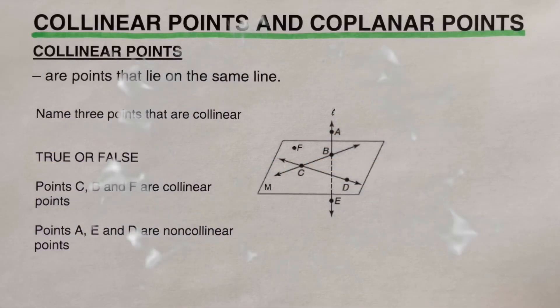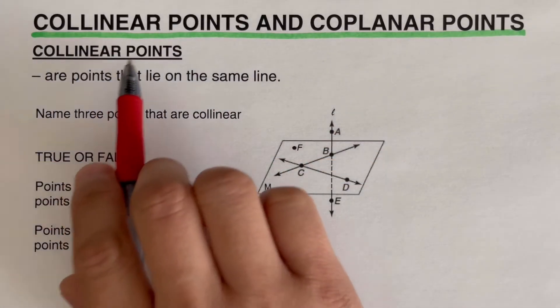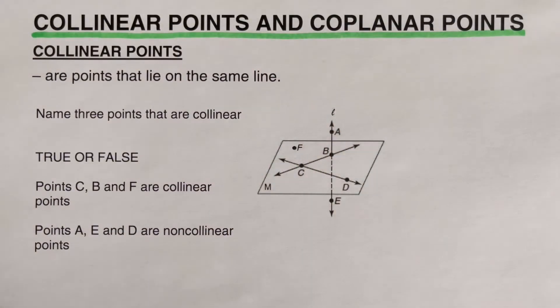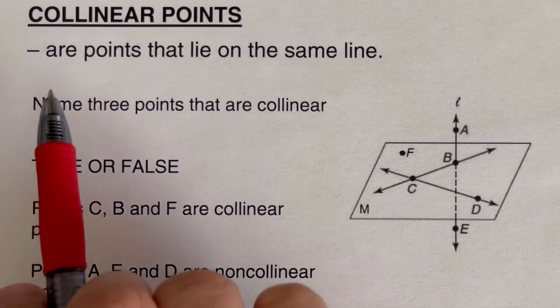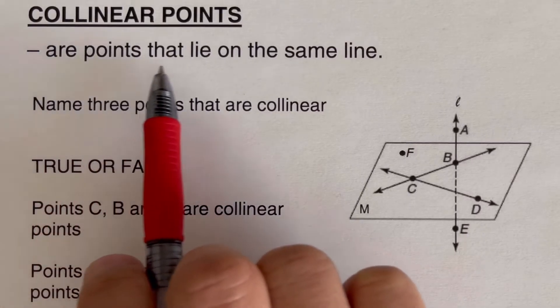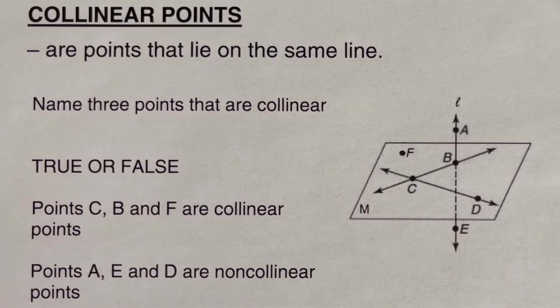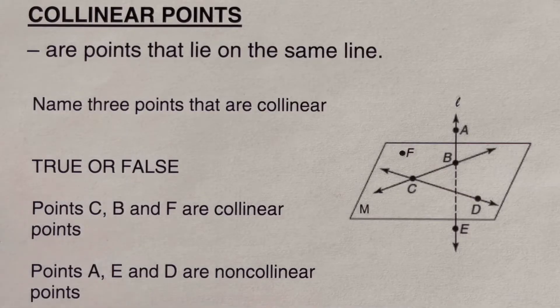Hello everyone, this video will focus on collinear points and coplanar points. Let's take the first one — collinear points are points that lie on the same line, meaning these points are actually sitting on the same line.